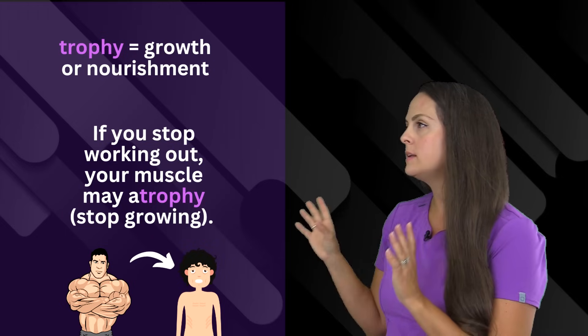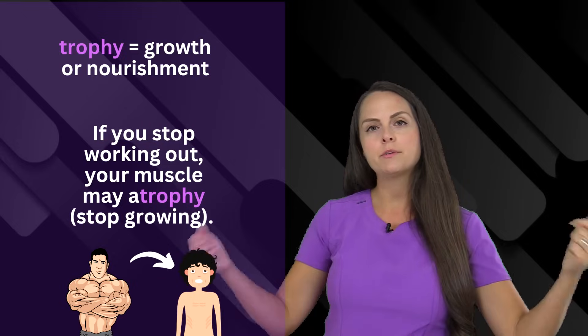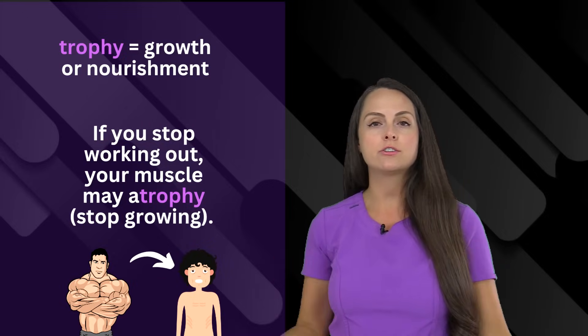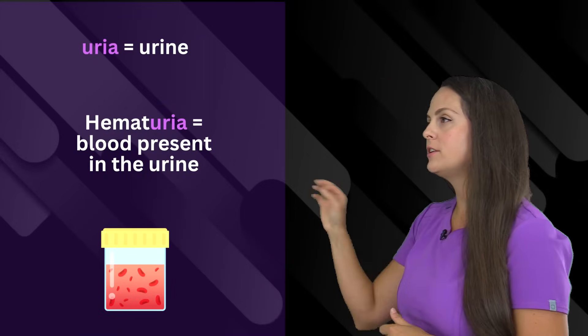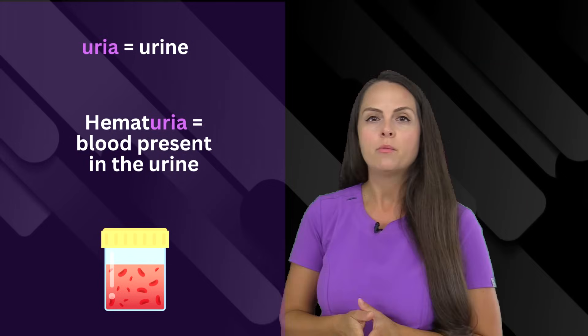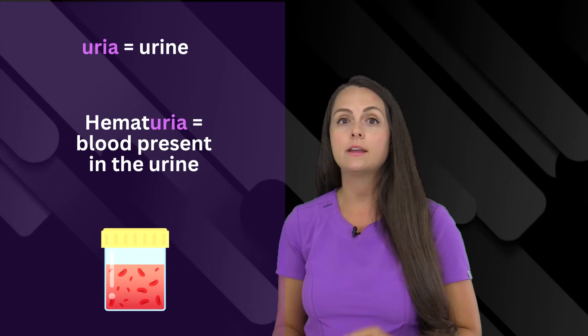And then trophy means growth or nourishment. So let's say a person quits working out. What's going to happen to their muscles? They are going to atrophy, where they're going to quit growing. And then lastly, we have uria, which means urine. Whenever you say hematuria, that means that a person has blood in their urine.